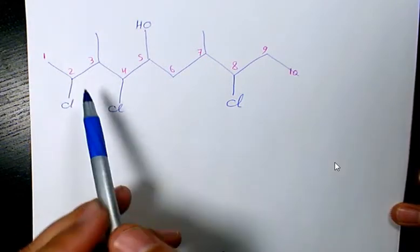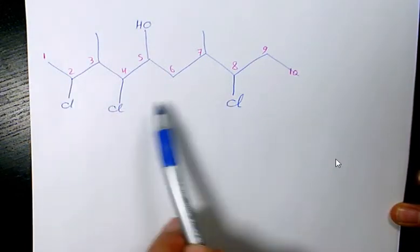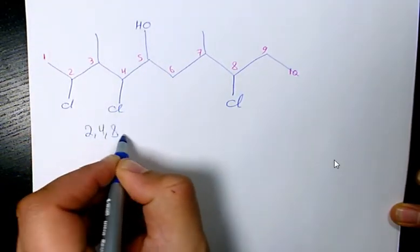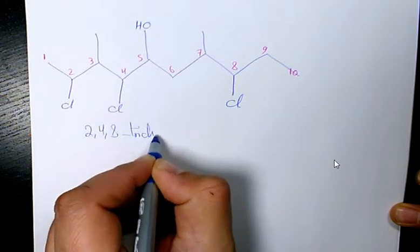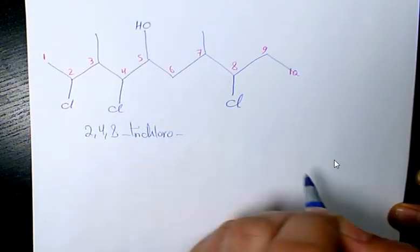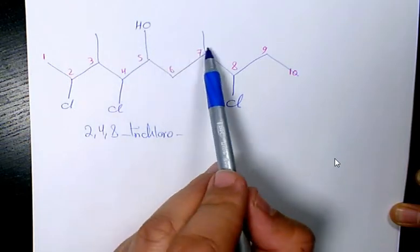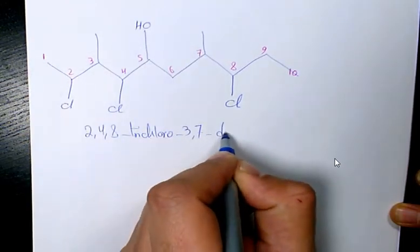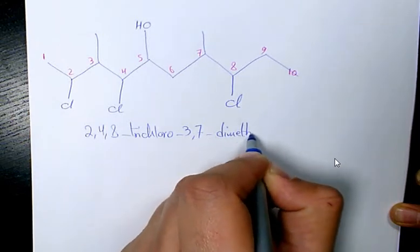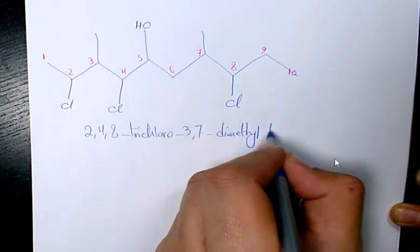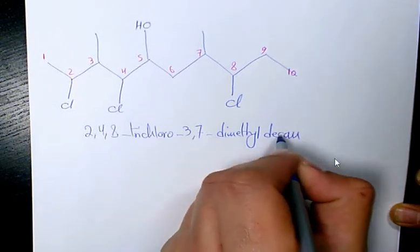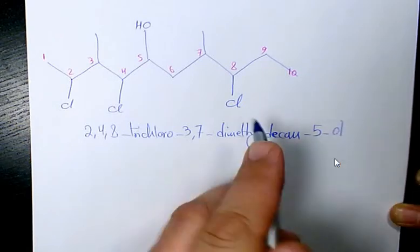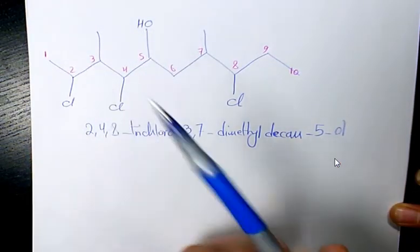How many chloro we have? We have three of them at 2, 4, and 8. 2,4,8-trichloro. Then we have methyl at 3 and 7: 3,7-dimethyl decan-5-ol, because the hydroxyl group is on the fifth one.